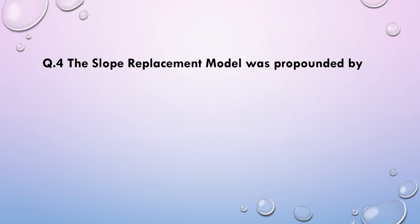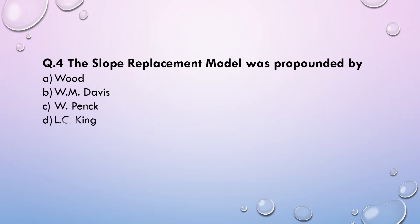Next question: The slope replacement model was propounded by — (a) Wood, (b) William Morris Davis, (c) Walther Penck, or (d) L.C. King. The answer is option C, Walther Penck. In this regard, we should know: the slope declining model was propounded by Davis, Penck propounded the slope replacement model, and L.C. King propounded the parallel retreat theory.